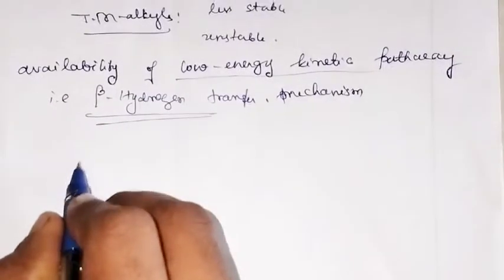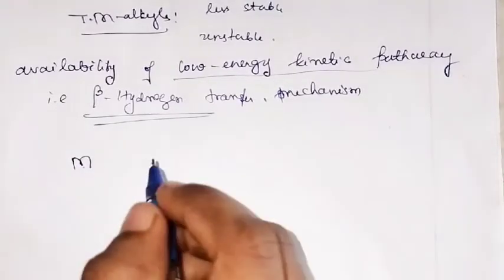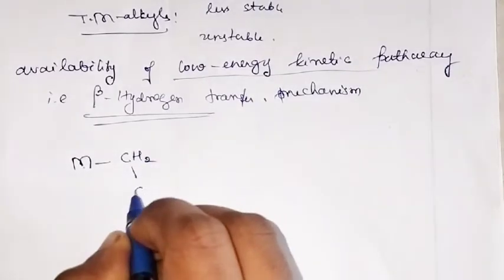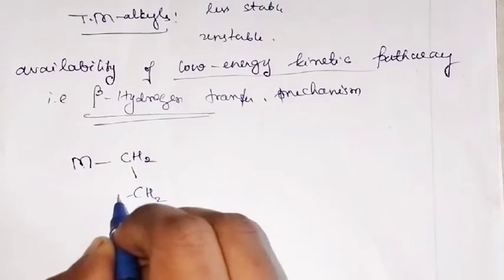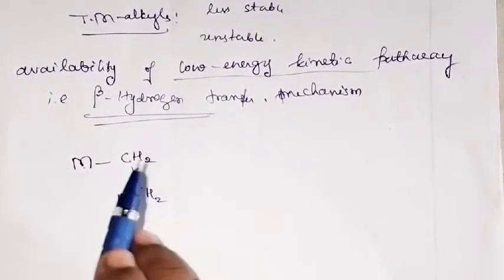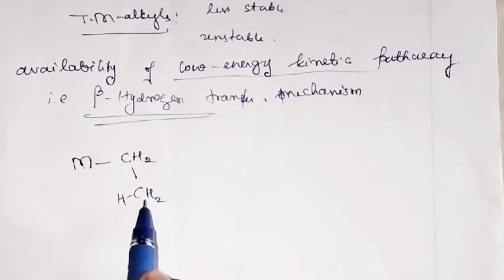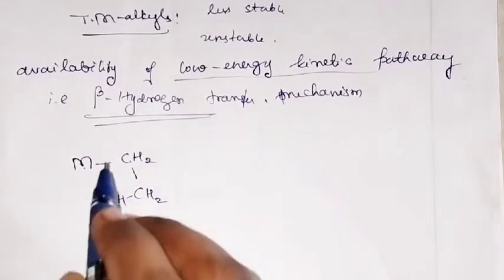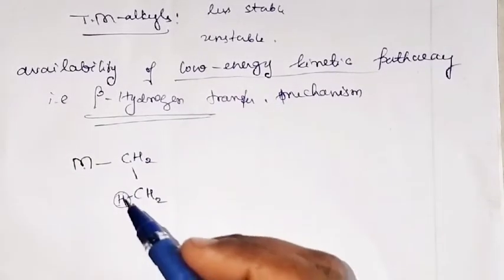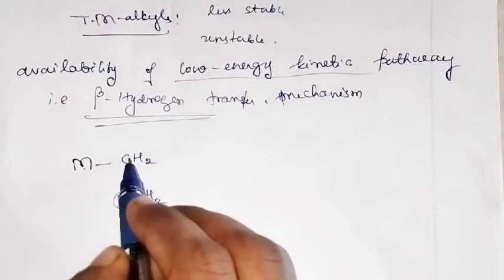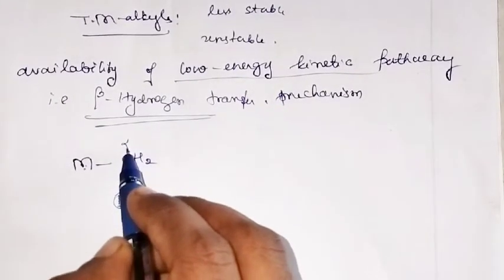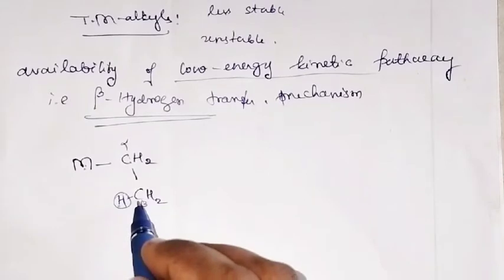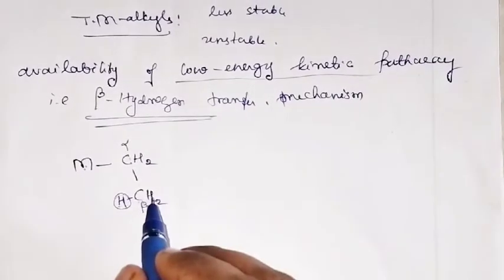For example, if you have a transition metal alkyl — M is a transition metal — you have CH2 and CH3 (written as CH2 and H). This is alpha carbon, the one attached to the metal, and this is beta carbon. Whatever hydrogen is attached to this beta carbon is called beta hydrogen.